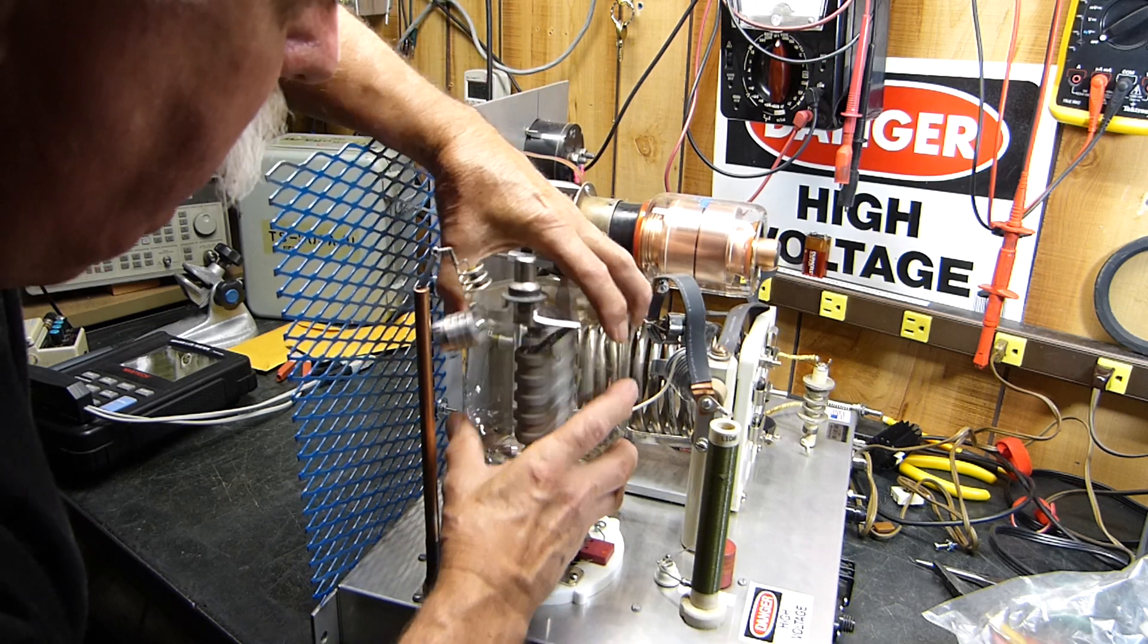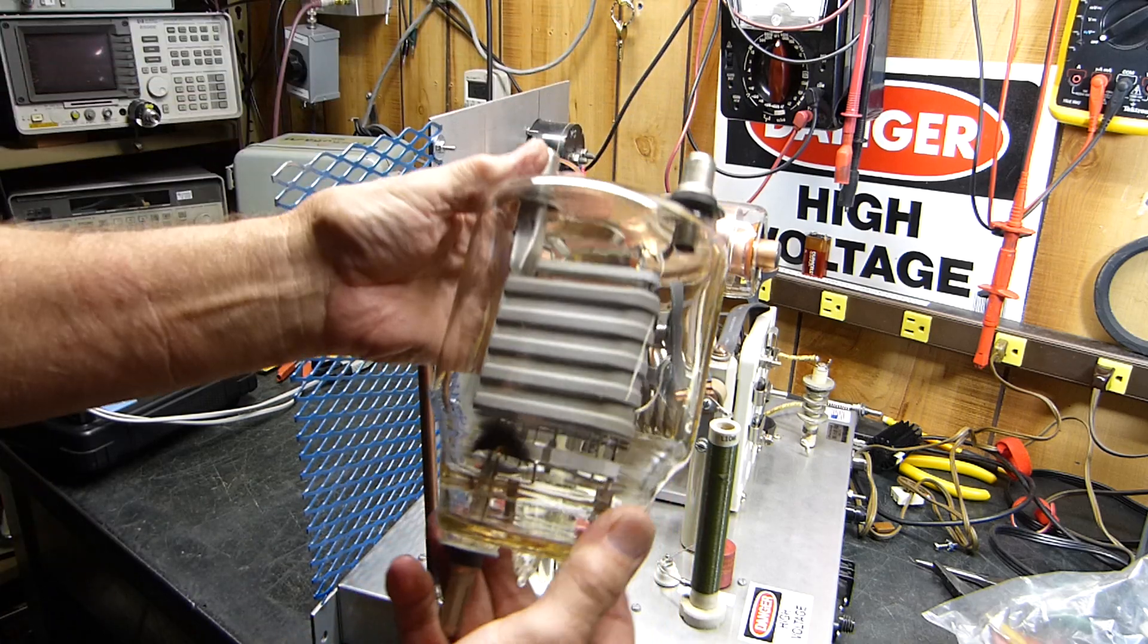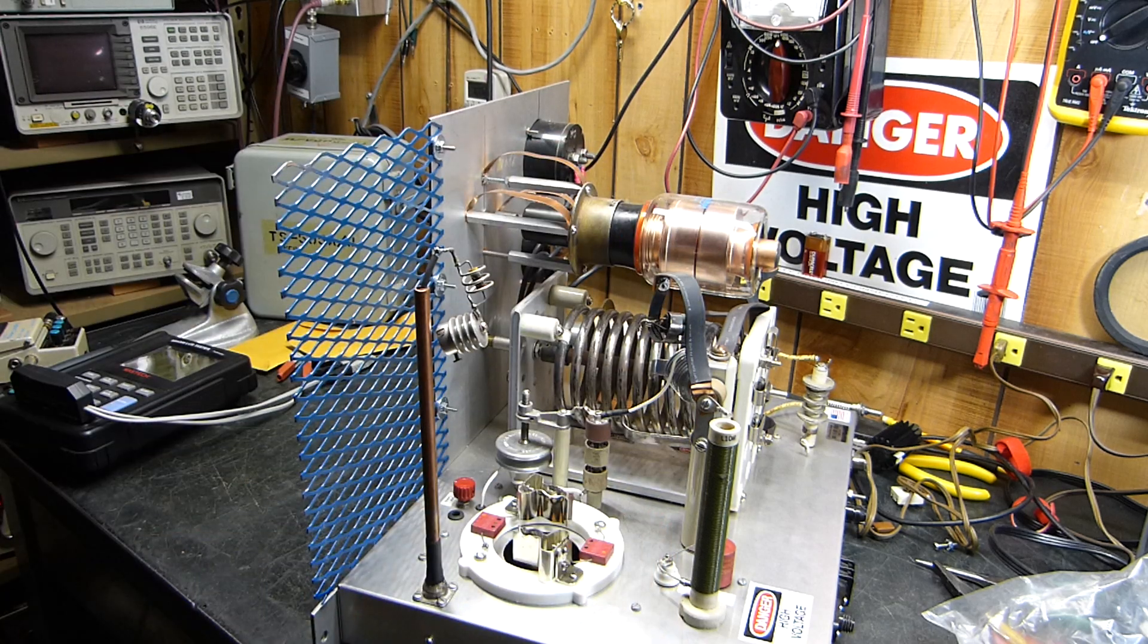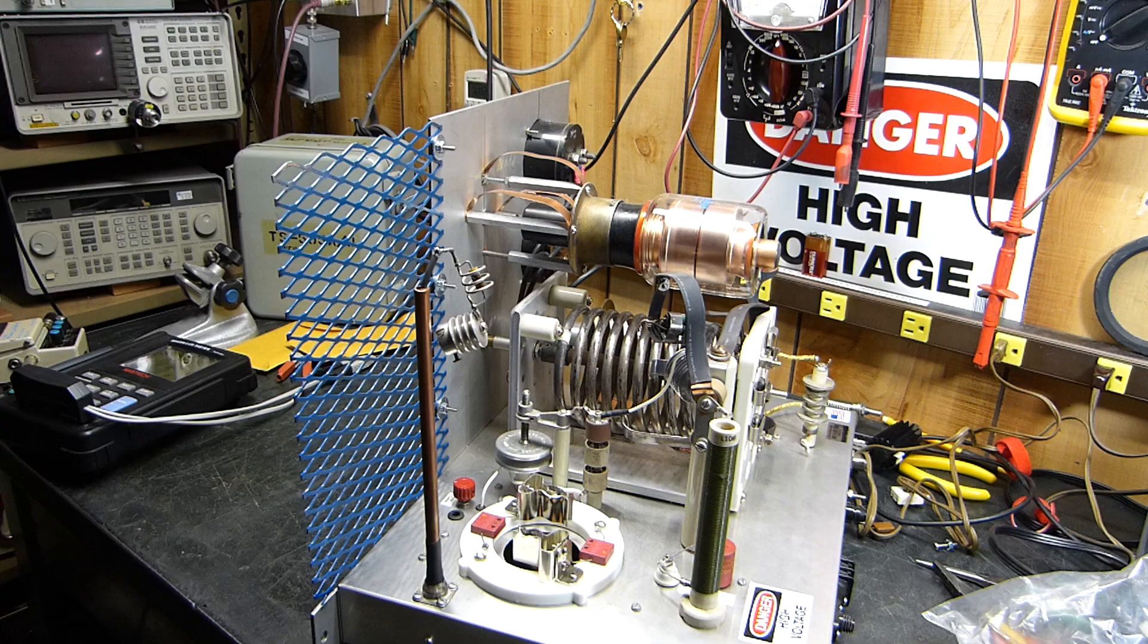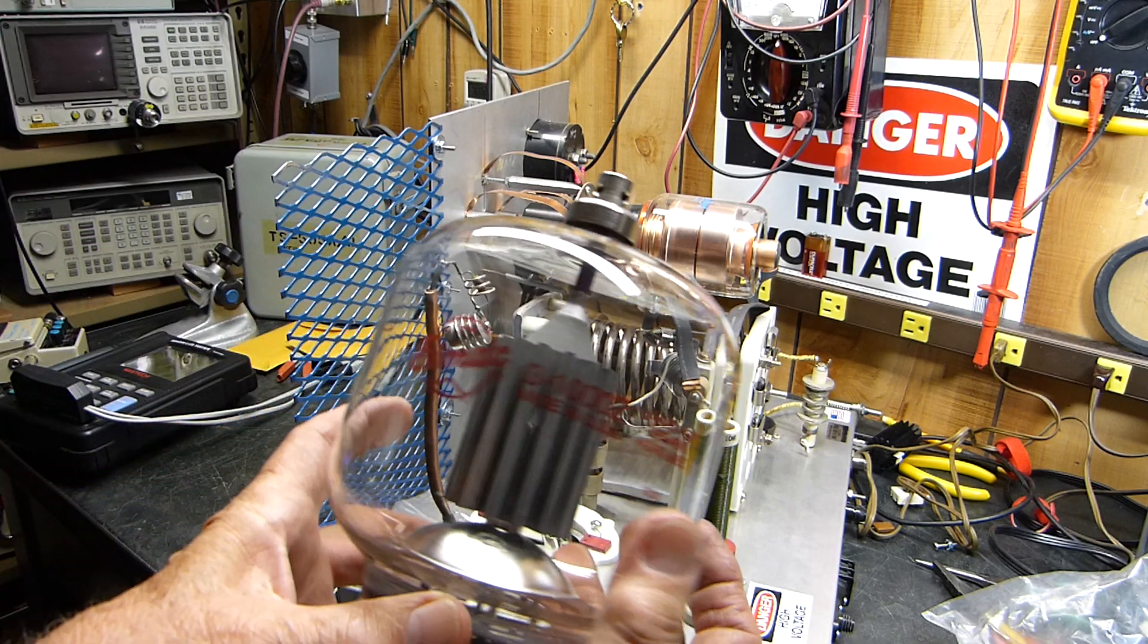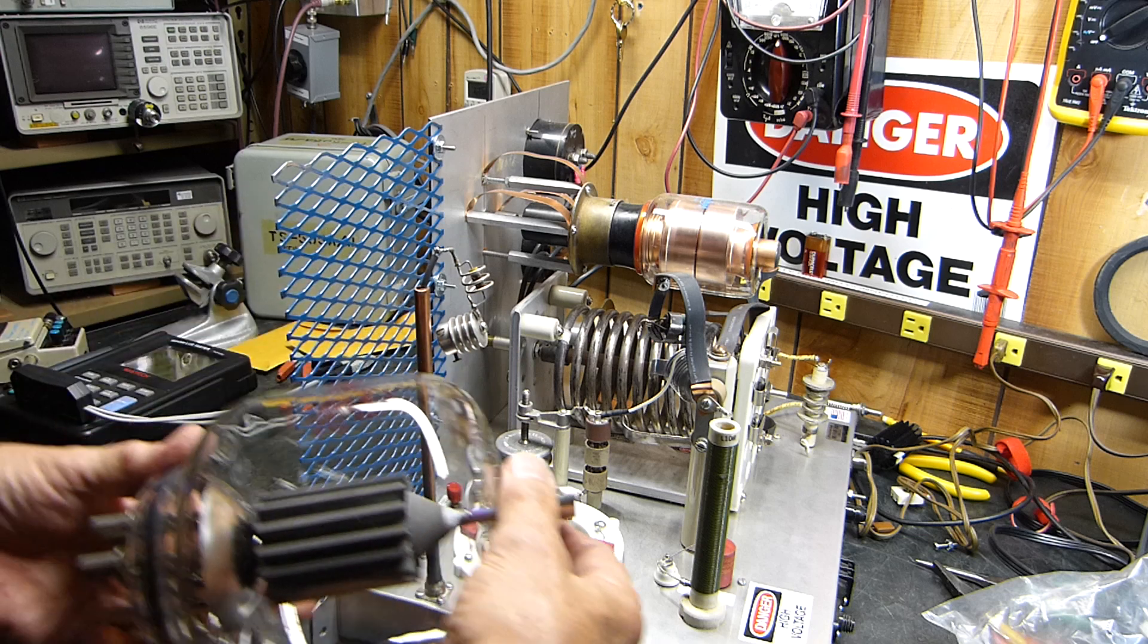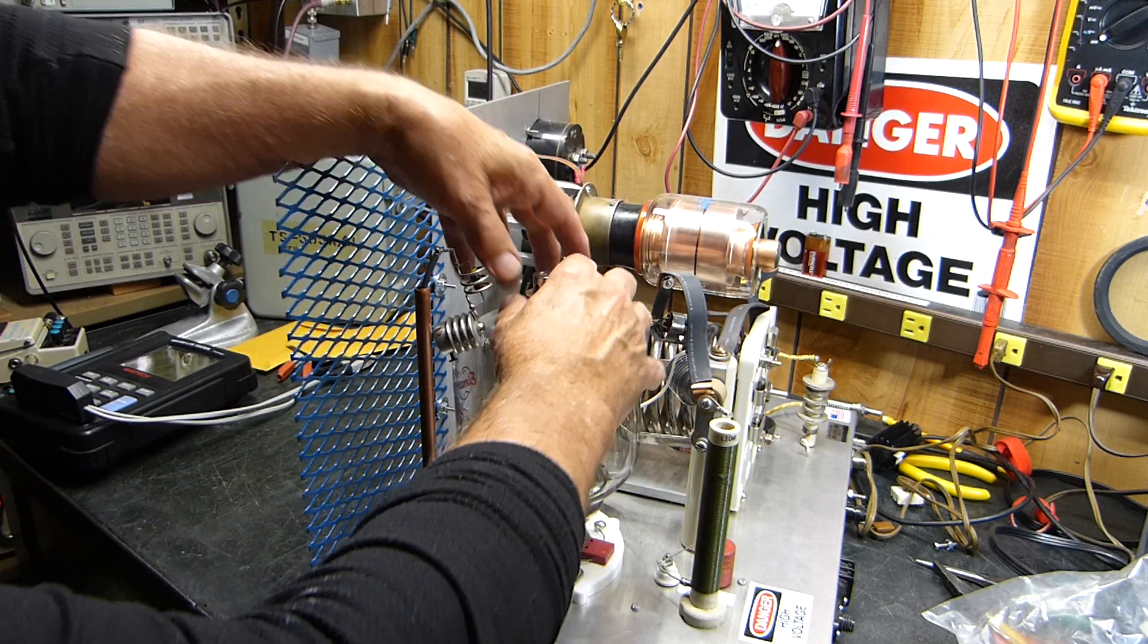And instead of that, let's put this guy in it: a 3-1000Z. I've got another 3-1000Z amplifier but let's go another one. It doesn't fit that socket, but we've got the correct socket right here. What do you think?